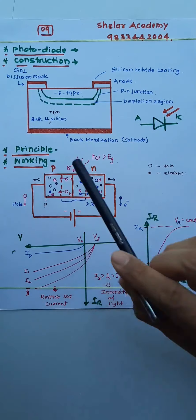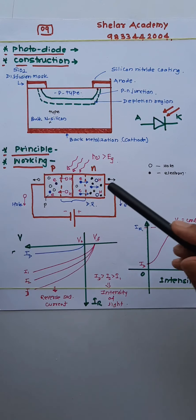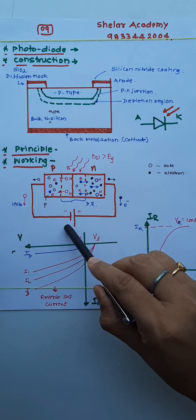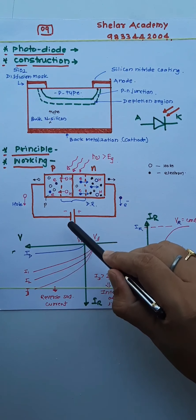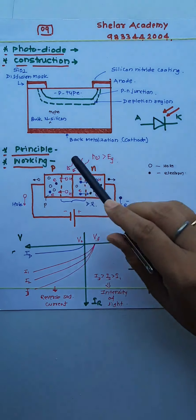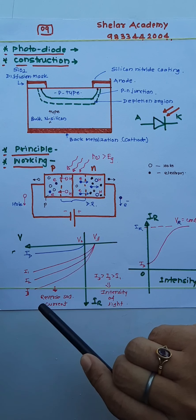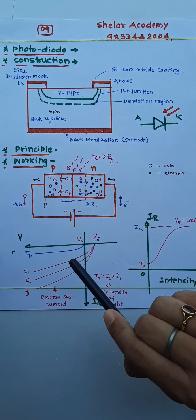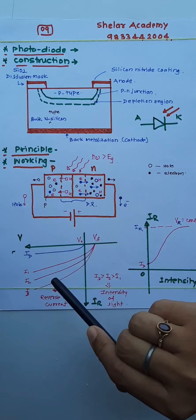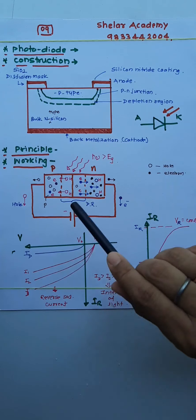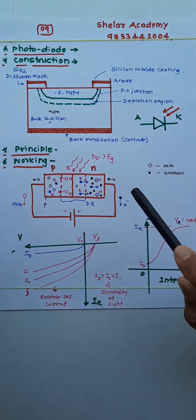What is the working principle? It is very simple. This device is operated in reverse bias mode, meaning the P region is connected to the negative terminal of the battery and the N region is connected to the positive terminal. Thermally generated minority carriers — free electrons in the P region and holes in the N region — experience the junction as forward bias, so a small but constant reverse current flows in the circuit. That reverse current is called dark current.